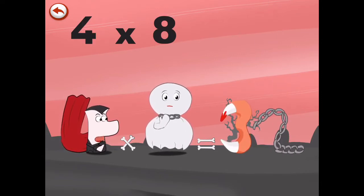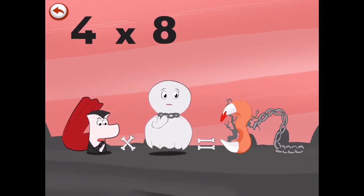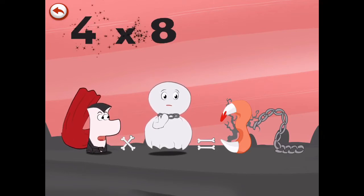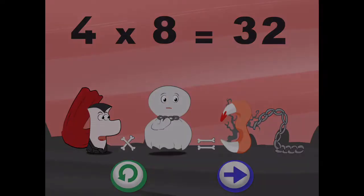Oh my gosh, his teeth fell out. The vampire's teeth in the shape of a 3 are pulled out by the piece of chain in the shape of a 2. 4 times 8 is 32.